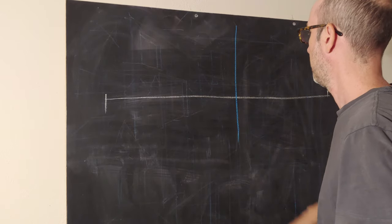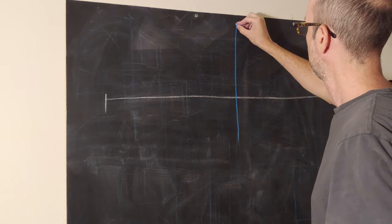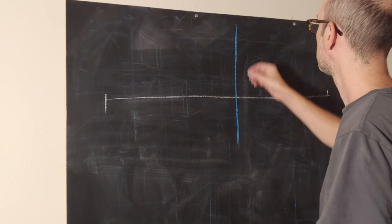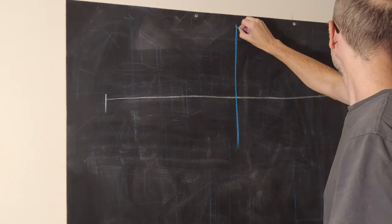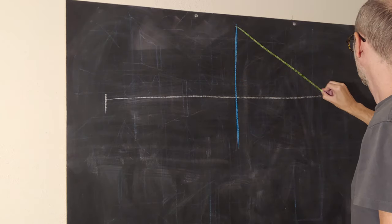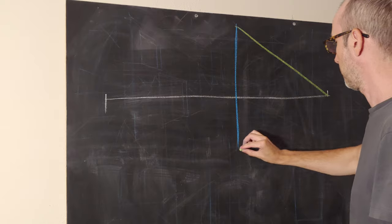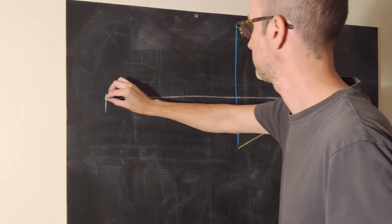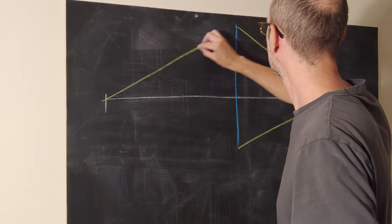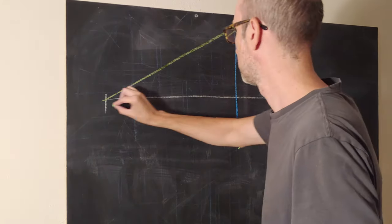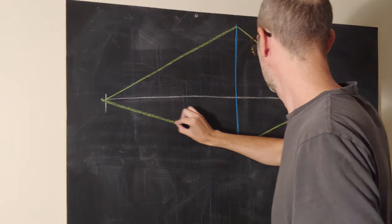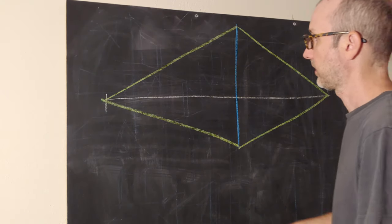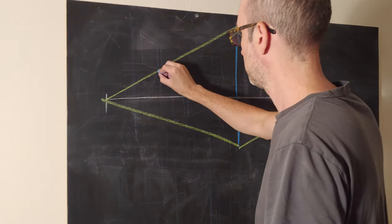We're going to create our main vertical. We're working with a two-sided box, so we're just doing two triangles. Then we're going to cut off both planes.